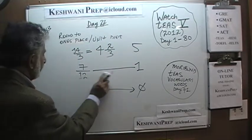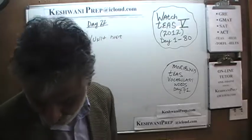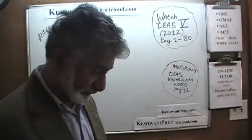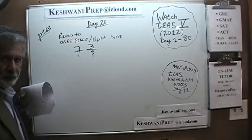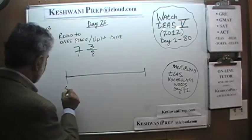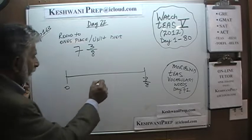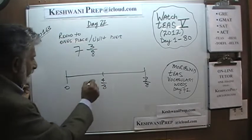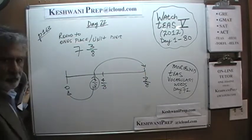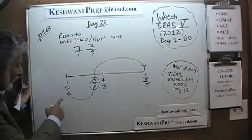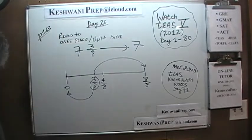Let's do 3 more. How about 7 and 3 eighths? We start with 0 and go all the way up to 8 eighths, which is 1. The halfway mark is 4 eighths. We are at 3 eighths, which is closer to 0. So when you round 3 eighths to the nearest one's, it becomes 0, and therefore this quantity simply becomes 7.